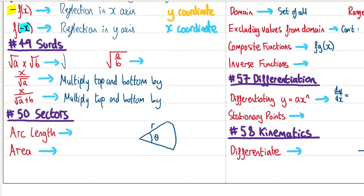Surds. Multiplying two surds: √a × √b = √(ab). Dividing two surds: √a ÷ √b = √(a/b). To rationalise a denominator with just a surd on the bottom, multiply top and bottom by √a. If the denominator is a surd plus a rational number, multiply top and bottom by the conjugate (changing the sign between the terms).